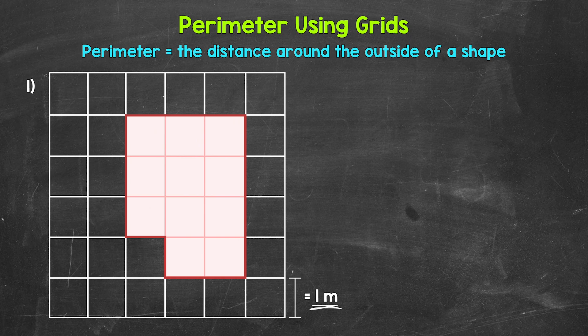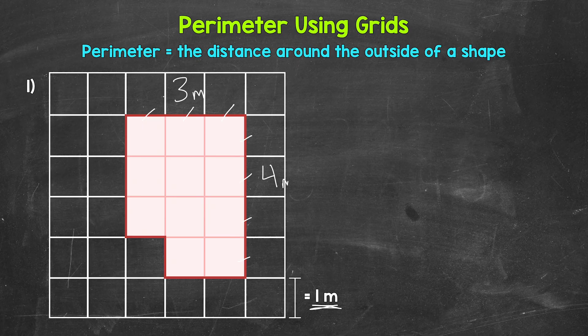Let's start by figuring out the side lengths, and we'll start up top. This is one meter, one meter, and one meter — so this side length is three meters. Let's go to this side here: one meter, two meters, three meters, four meters — so this side length is four meters.